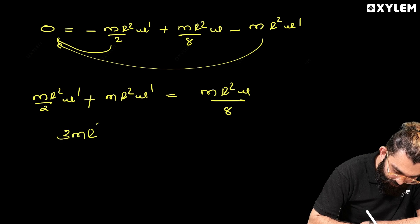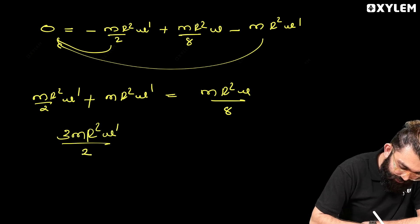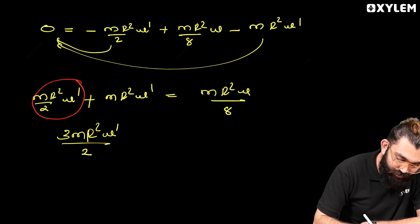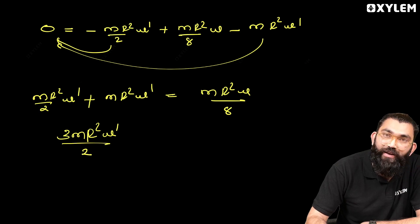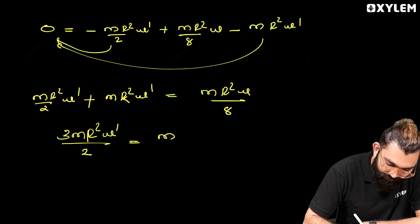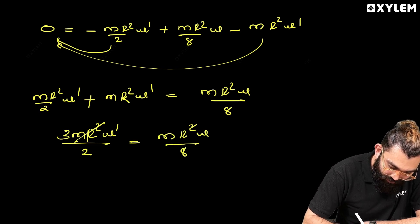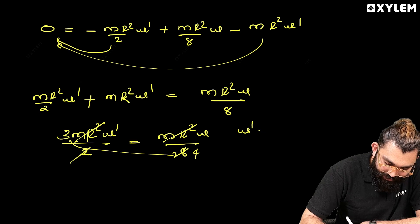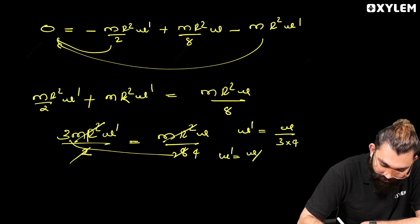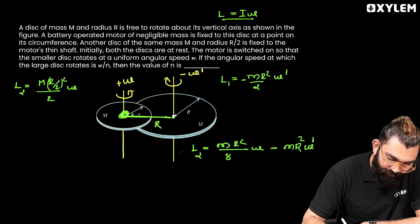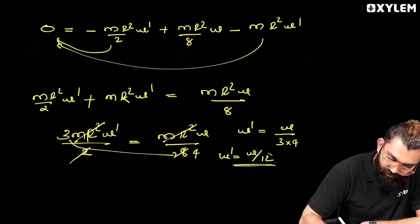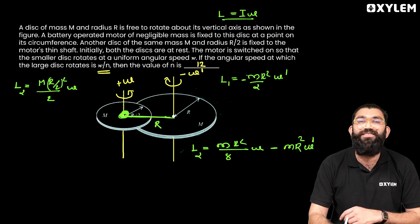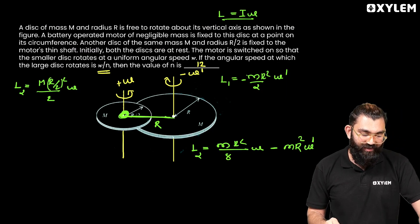Solving: 3/2 × omega_dash = omega/8, so omega_dash = omega × 2/(8 × 3) = omega/12. Comparing with omega/n, we get n = 12. The MR² and mR² terms cancel appropriately, giving the final answer n = 12. Thank you so much.